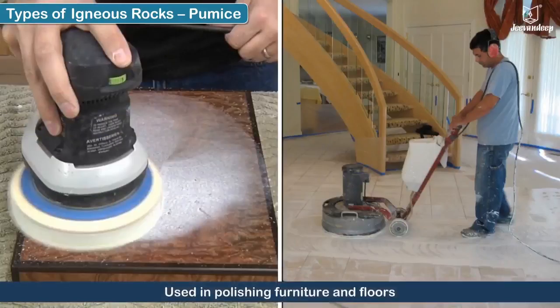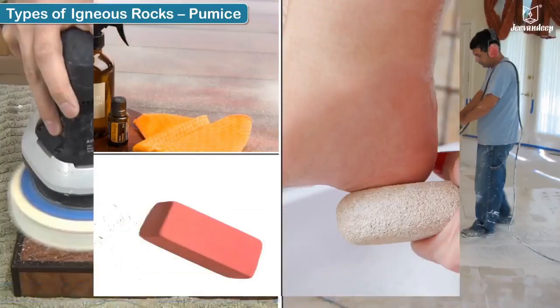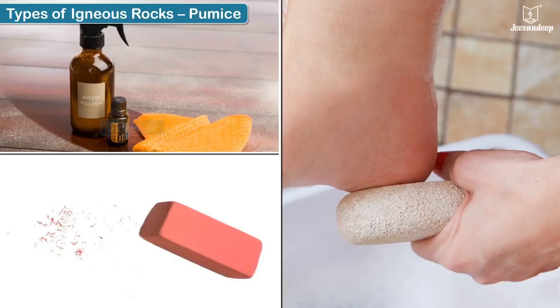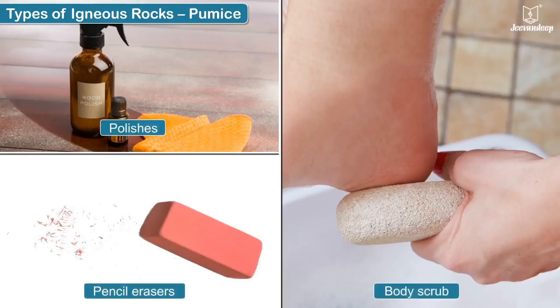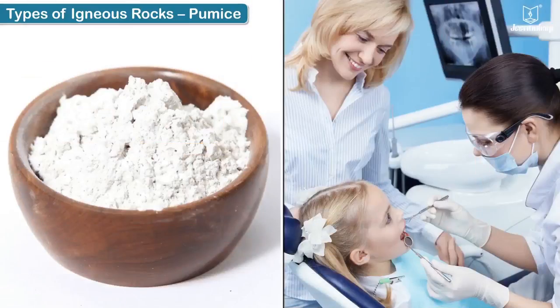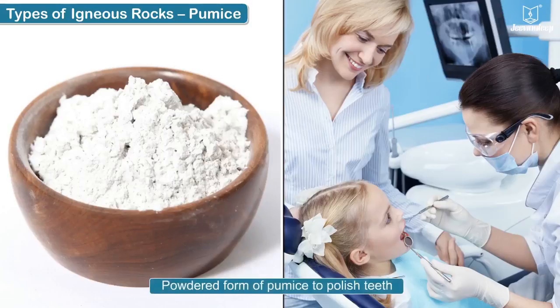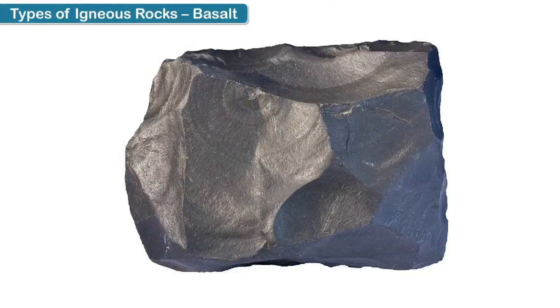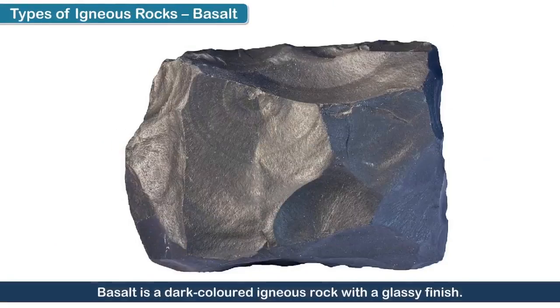This makes pumice so porous that it can also float on water. Pumice is light and is used to polish furniture and floors. It is also used in polishes, pencil erasers, and as a body scrub.